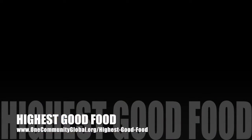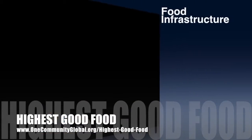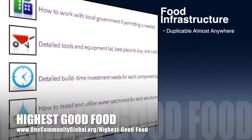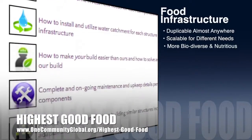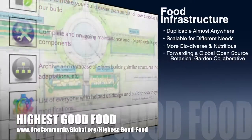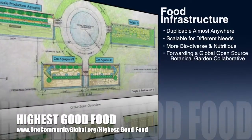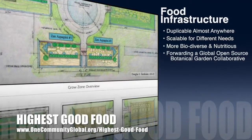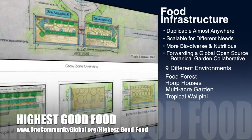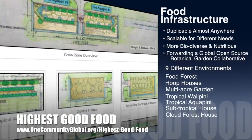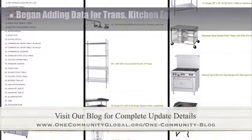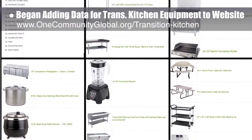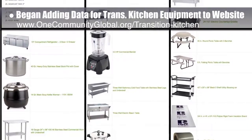One Community's approach to highest good food is duplicable almost anywhere, scalable for different needs, more biodiverse and nutritious, part of forwarding a global open source botanical garden, collaborative, and includes nine different free shared and duplicable growing environments. This week in highest good food, the core team began adding the data for the transition kitchen equipment to the website.